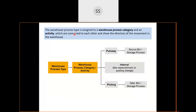The warehouse process type is assigned to a process category and an activity, which determine the direction of goods movement — whether it is for put-away, picking, or internal movement. For put-away you can maintain a source bin; for picking you can maintain a destination bin.